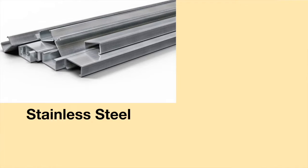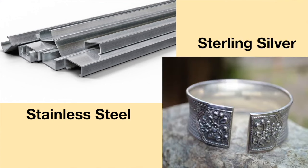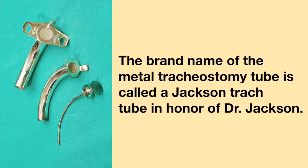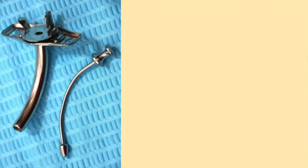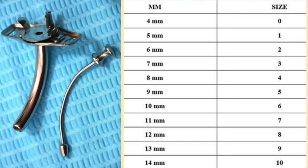The metal tracheostomy tube can either be made from stainless steel or sterling silver. The brand name of the metal tracheostomy tube is called a Jackson tracheostomy tube in honor of Dr. Jackson. This tracheostomy tube continues to be made today and is available in a wide range of sizes.